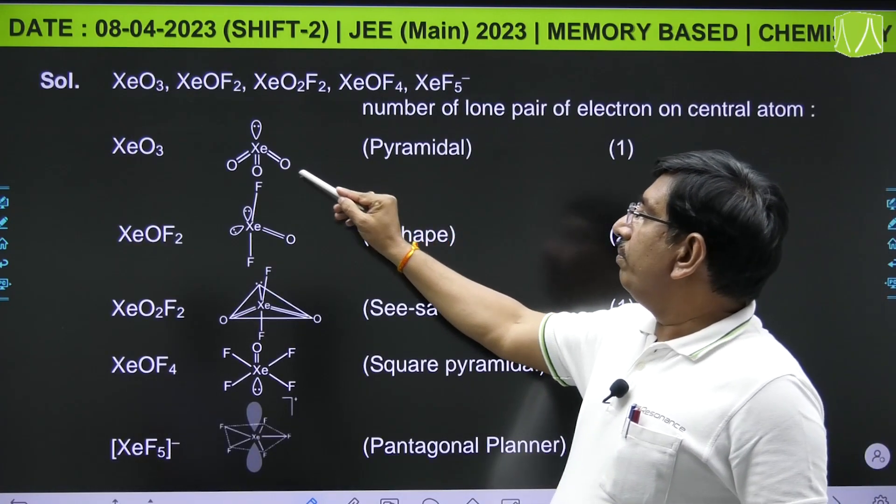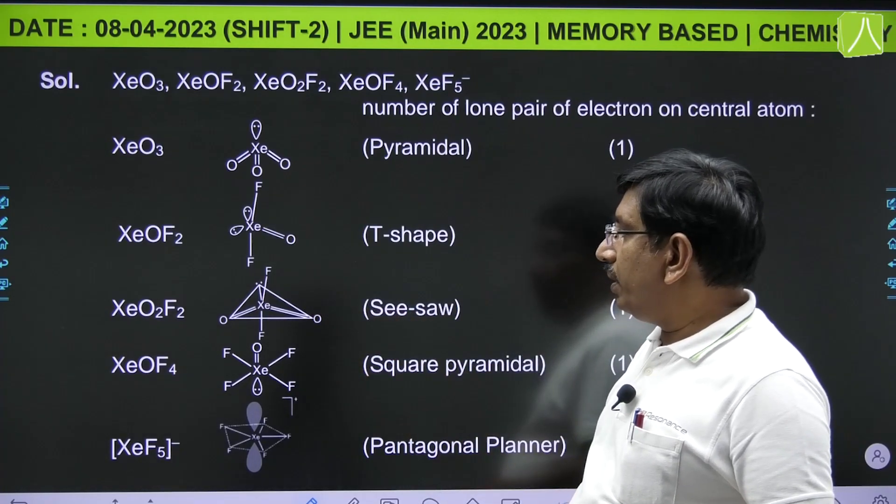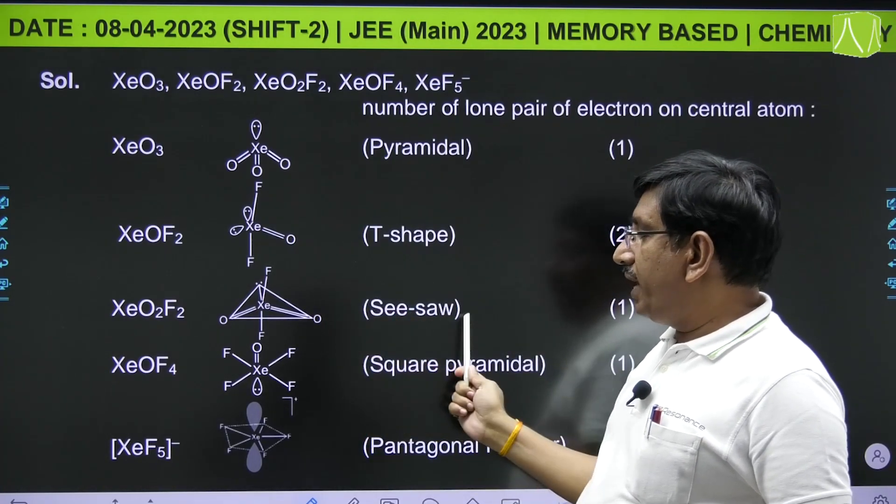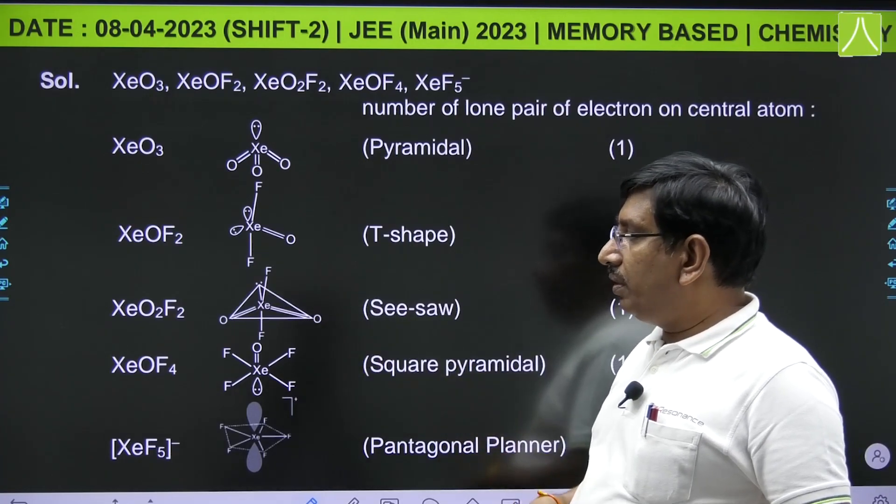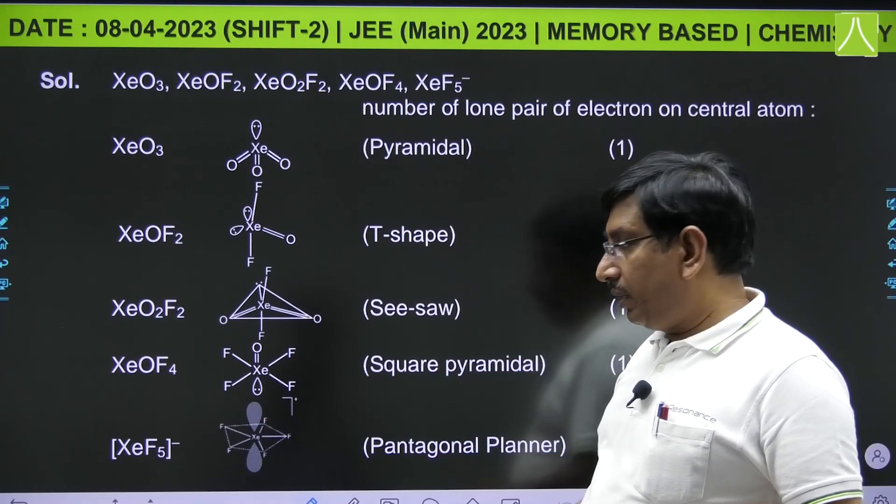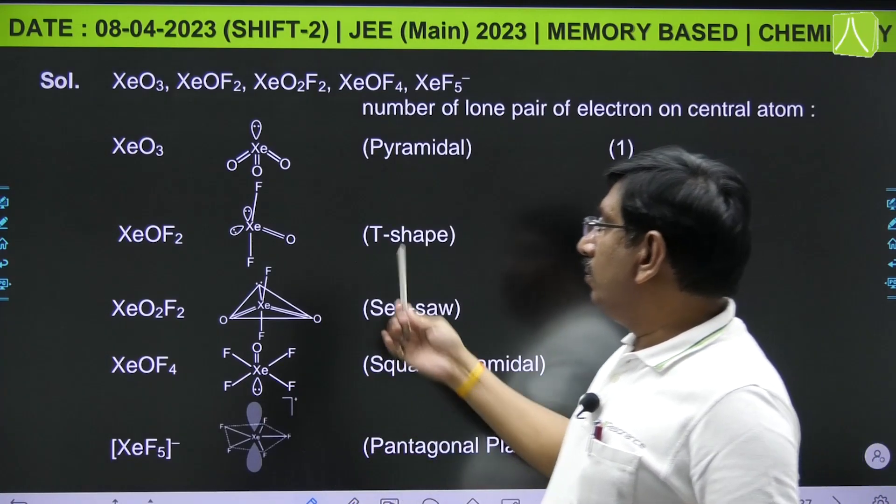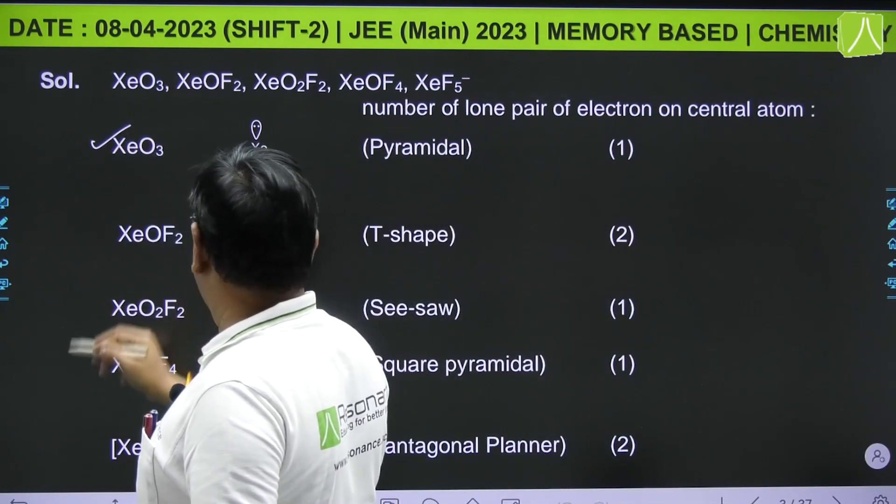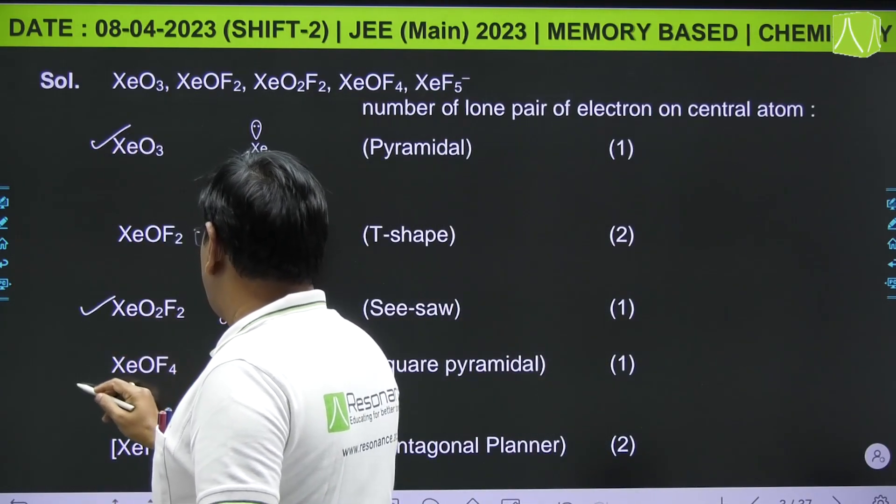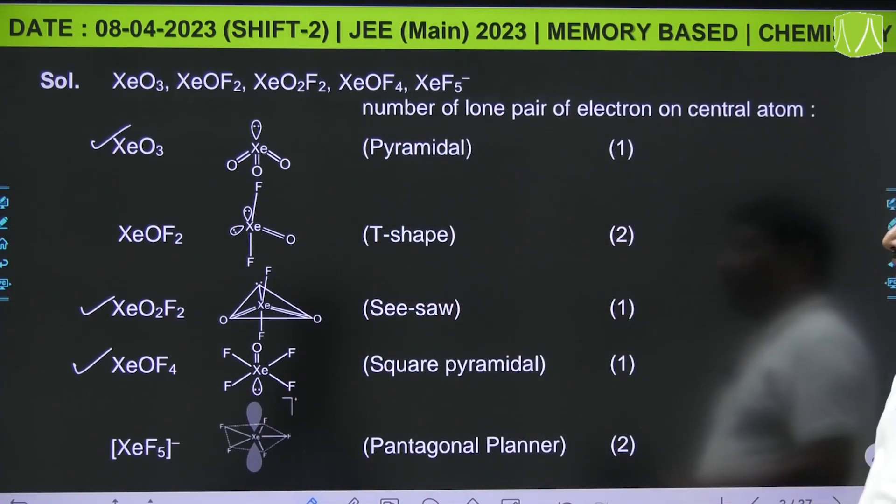XeO₃ has one lone pair, XeOF₂ has two lone pairs, XeO₂F₂ has see-saw shape and one lone pair, XeOF₄ has also one lone pair, and XeF₅⁻ has two lone pairs. So only three of these are having one lone pair compounds: XeO₃, XeO₂F₂, XeOF₄.